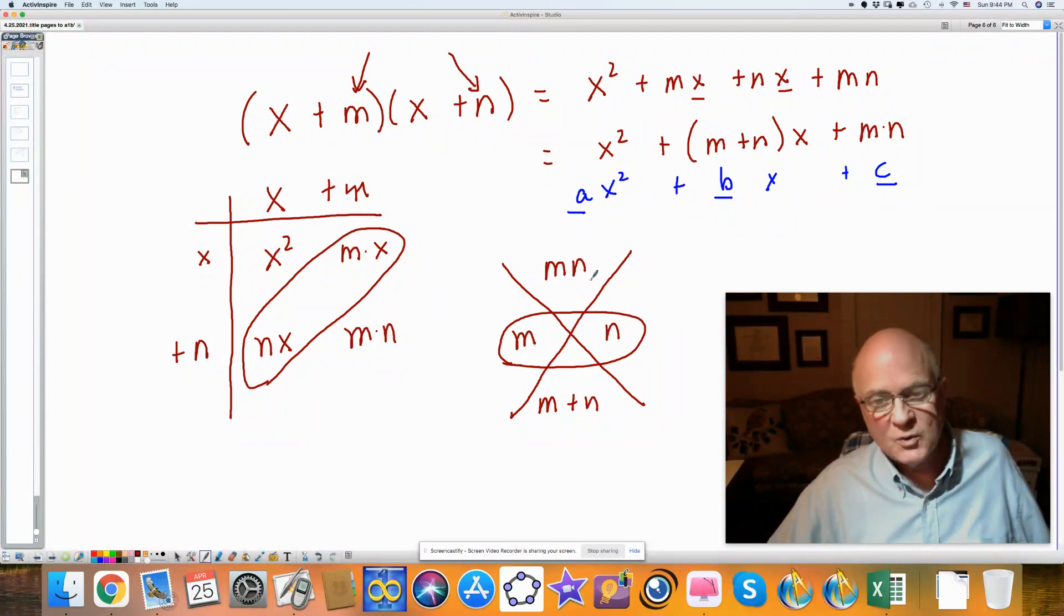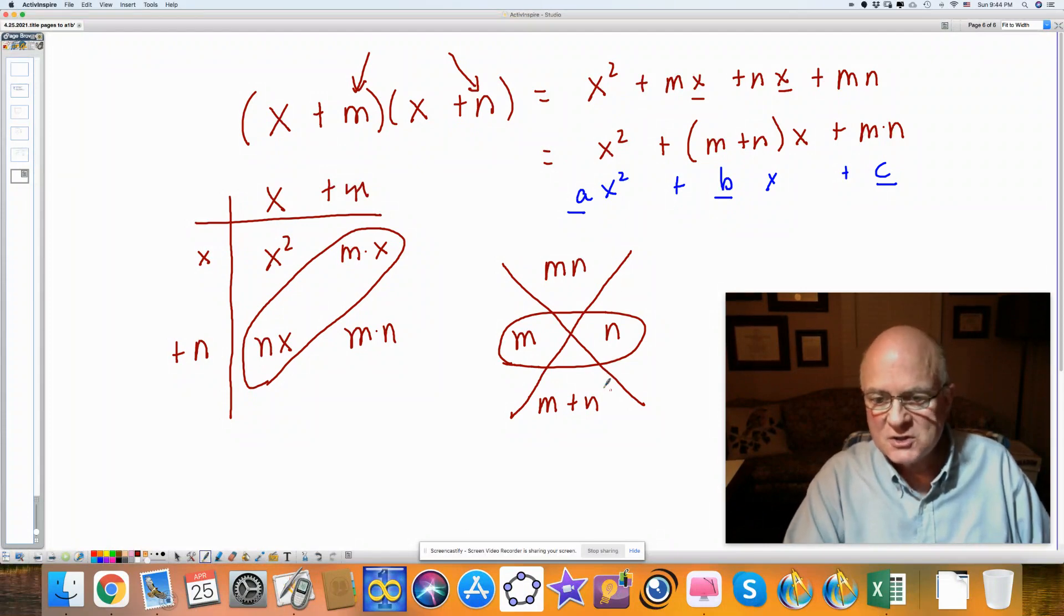This also will work if we have a leading coefficient that is not 1, but that's a whole other day of discussion. Just know that using the diamond is a very practical way of finding a factor, if there exists a factor. Good luck and success.